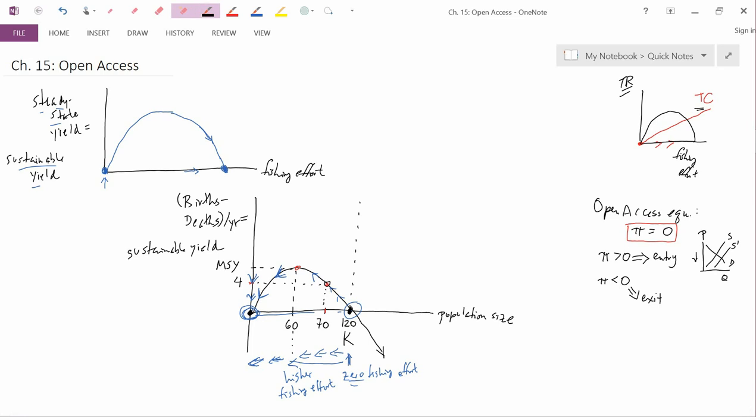Well then it becomes pretty easy to go back to the graph here and figure out what the equilibrium condition is and how it changes. I'm going to redraw the graph now a little bit bigger. So, fishing effort, dollars, total revenue, total cost.